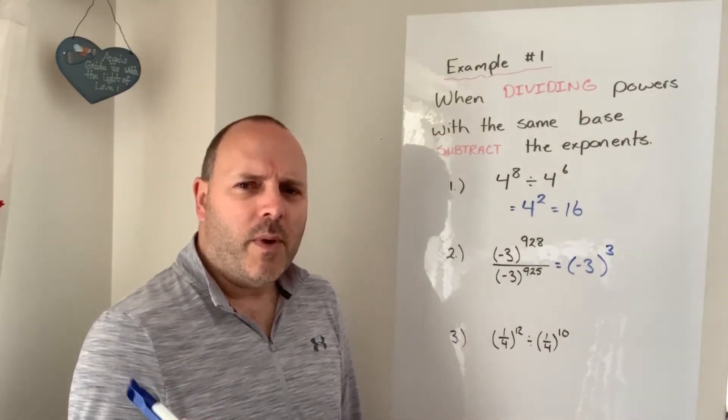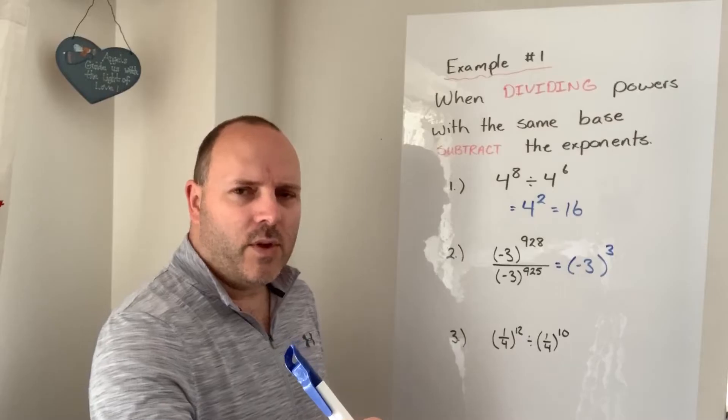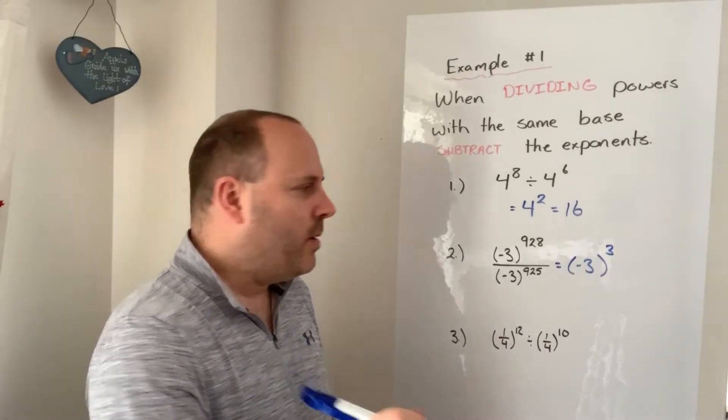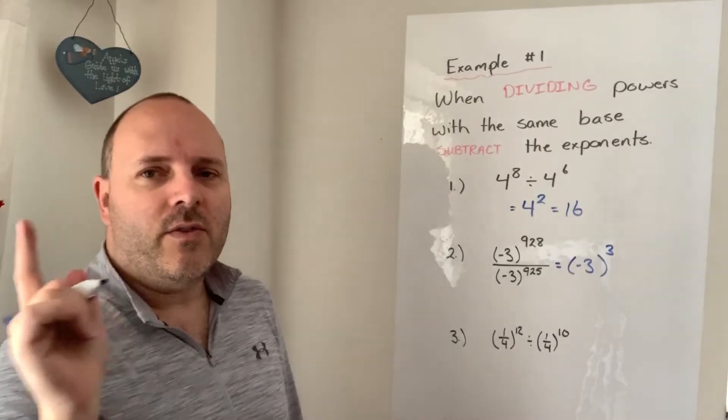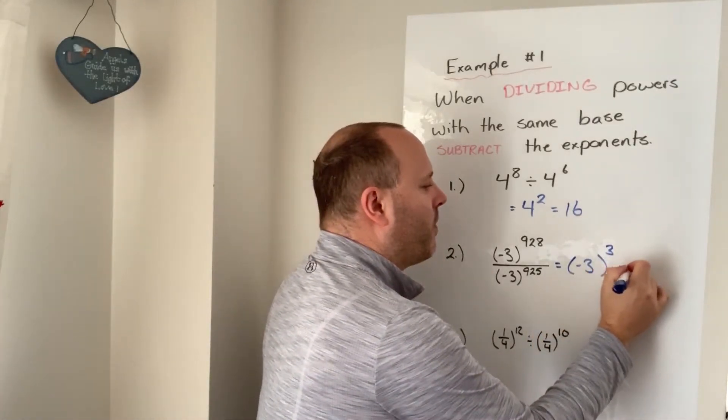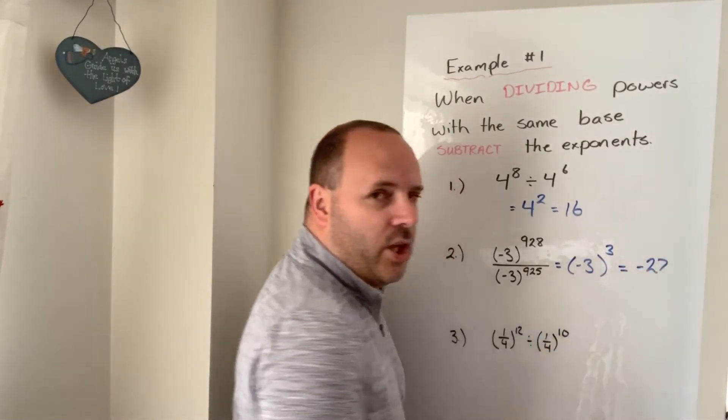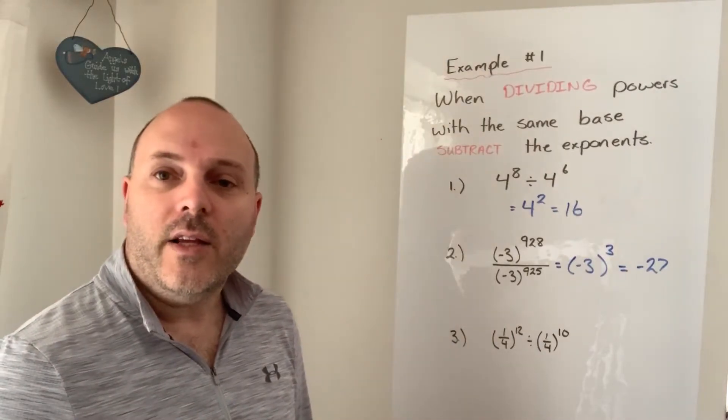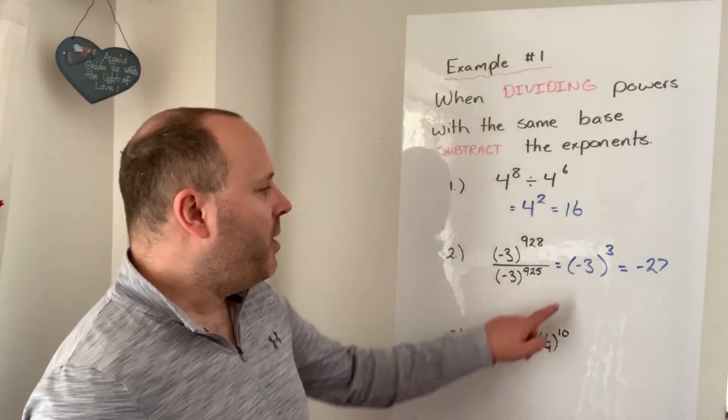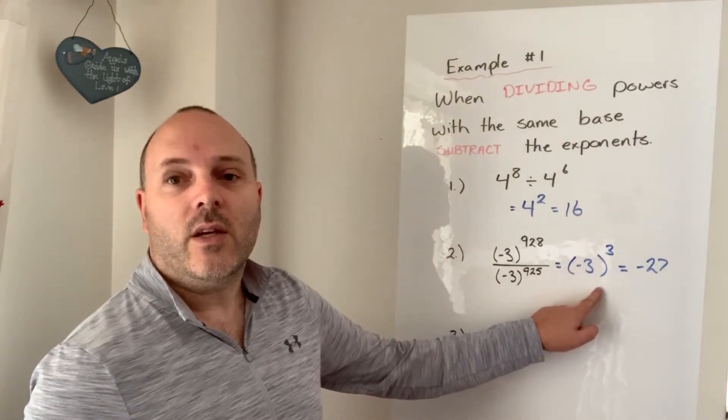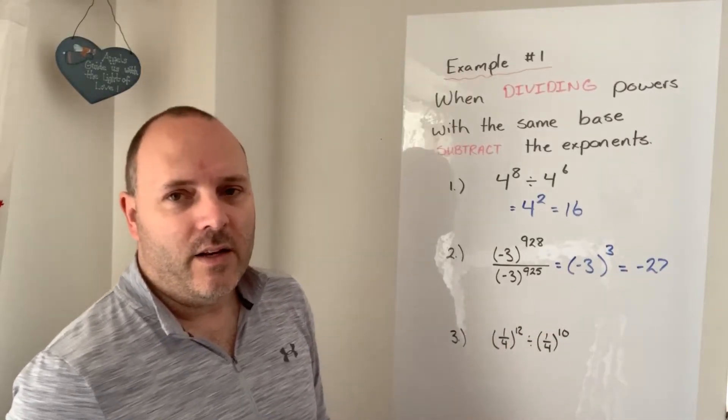So negative 3 to the power of 3, that's negative 3 times negative 3. It's positive 9 times negative 3 again. That's negative 27. You don't have to work that out in your head. You can use your calculator, but make sure you type it in with the brackets so that you get the correct answer of negative 27.